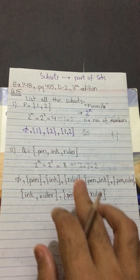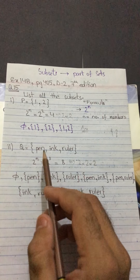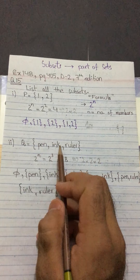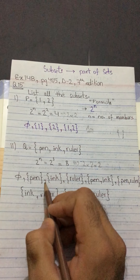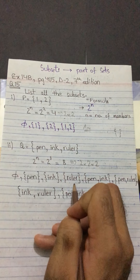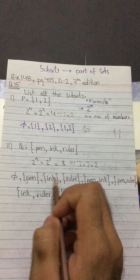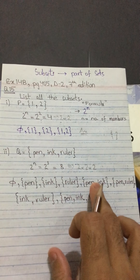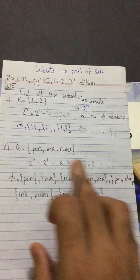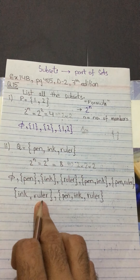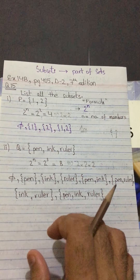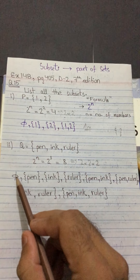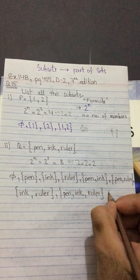By rule, the first subset is the null set and the last will be the original set. Then I write all members individually: pen, ink, ruler. Next, I pair them up in twos: first {pen, ink} — hiding ruler; then {pen, ruler} — hiding ink; then {ink, ruler} — hiding pen. Finally, I write all three together: {pen, ink, ruler}. Counting them: one through eight — those are the 8 subsets of set Q.